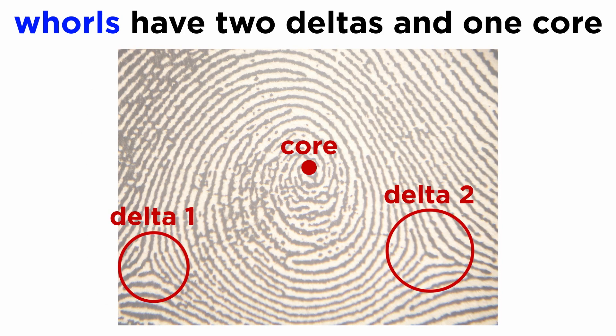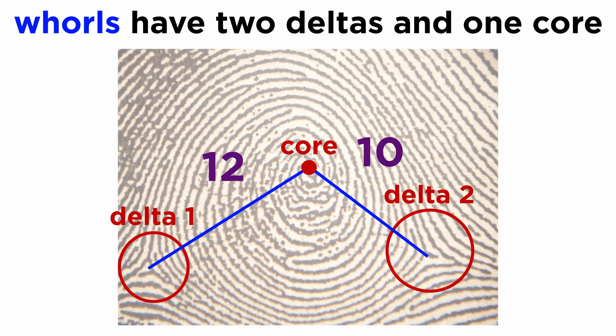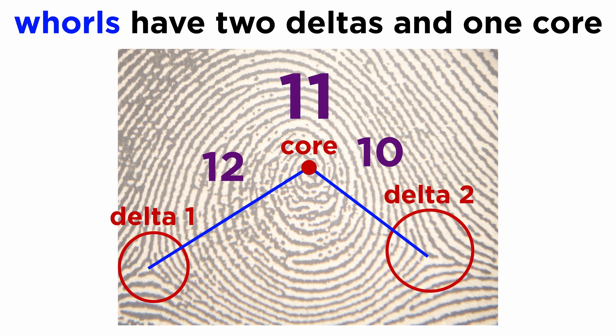But what about whorls? They have two deltas and one core. Therefore, going by this method, there will be two imaginary lines and two ridge counts, one on each side. Which of the two ridge counts is to be considered in classification — do we take the average of both, or is the larger count considered? If there are ten ridges on one side and twelve on the other, is the ridge count twelve or eleven? Actually, both of these answers are wrong. This is where ridge counting has its limitations, and we move towards ridge tracing for whorl patterns.